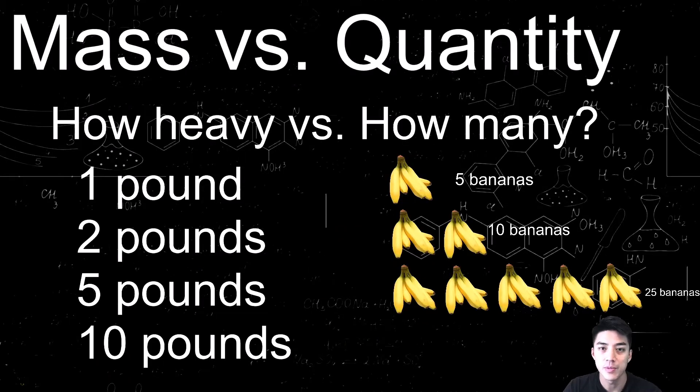Before I start explaining the mole and how it's used in chemistry, you have to get familiar with the idea of mass versus quantity. So basically, how heavy is something versus how many are there. So just use bananas as an example. If you have one pound of bananas, within that one pound bunch, you would have five bananas.